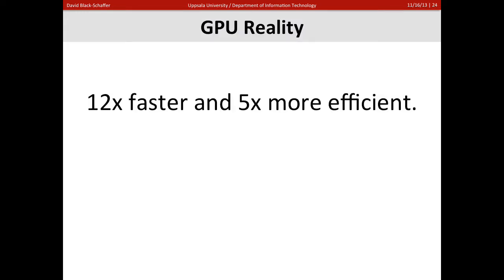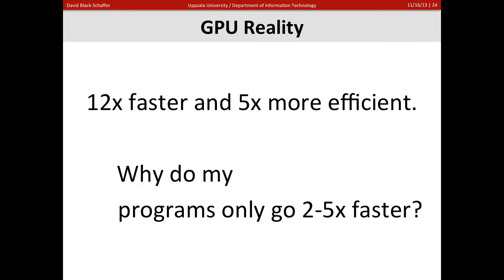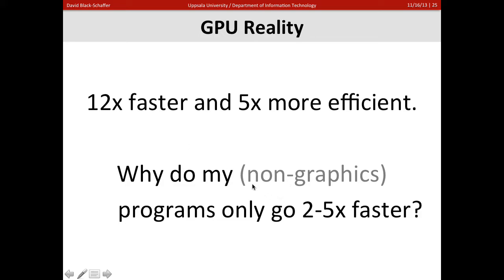We're going to talk about the reality of GPUs today. We saw they have a lot of potential, but it's difficult to get that potential in real applications. The GPU reality is their potential to be 12 times faster and five times more efficient. The real question is why do non-graphics programs only go two to five times faster? If you were writing a graphics-type program, you'd see the full improvement, but for non-graphics workloads, you're running a non-graphics program on a graphics processor.